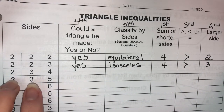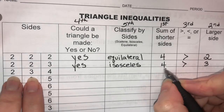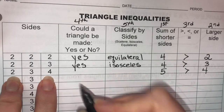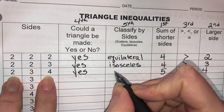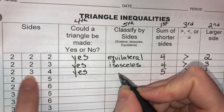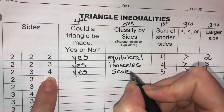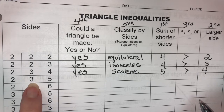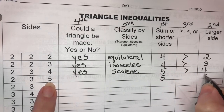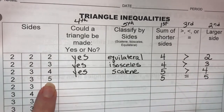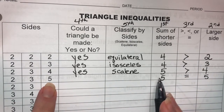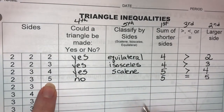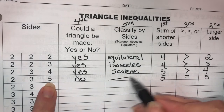Add the two shorter sides here. 2 plus 3 equals 5. 5 is greater than that last side of 4. So could we make a triangle? Yes, we could. What kind of triangle would it be? Well, if all three sides are different, we would call that a scalene triangle. Add the two shorter sides here. 2 plus 3 is 5. The larger side is 5. 5 is equal to 5. So can we make a triangle if the sum of the two shorter sides is equal to the larger side? No, we cannot. We don't need to name it if you can't make a triangle.